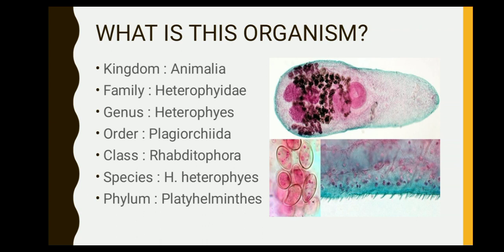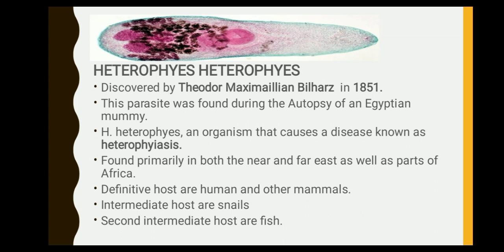So what is this organism? This organism belongs to the Kingdom Animalia, family Heterophyidae, genus Heterophyes, order Plagiorchiida, class Rhabditophora, species Heterophyes, and phylum Platyhelminthes. This Heterophyes was discovered by Theodore Maximilian Bilharz in 1851, where this parasite was found during the autopsy of an Egyptian mummy.